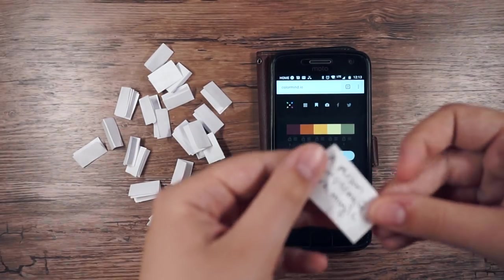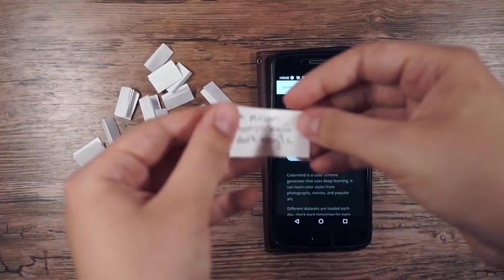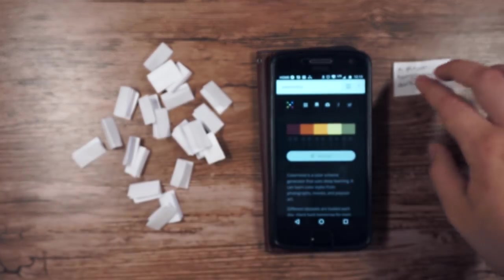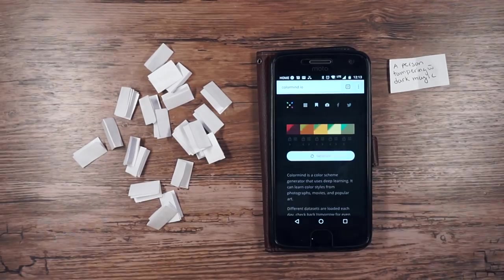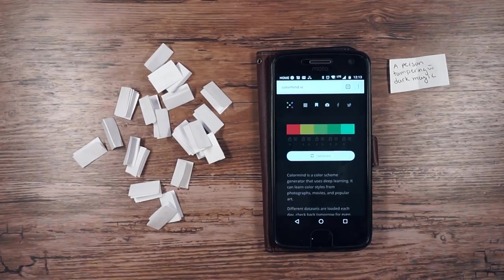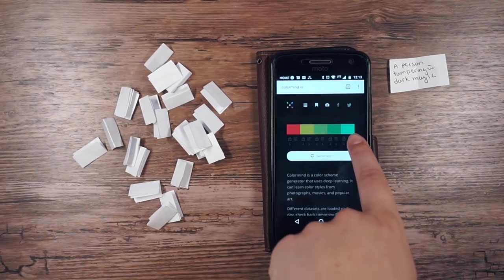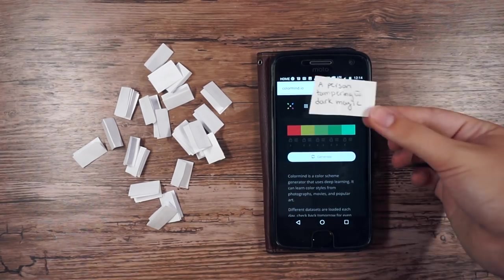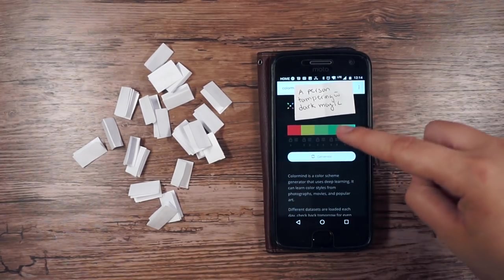Okay, here's one: a person tampering with dark magic. Interesting. I'm going to generate a color palette and I have to go with it. Okay, I kind of like that. It reminds me of a jungle—this is the water, and like plants. So a person tampering with dark magic with this color palette.